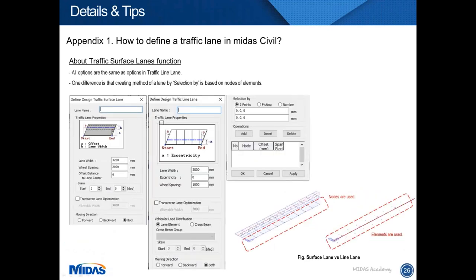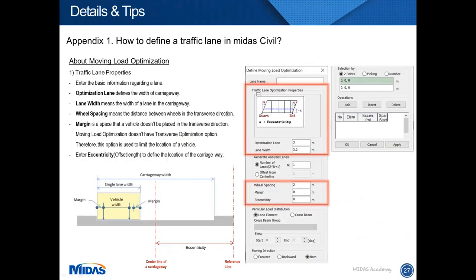For a planar element model, Midas Civil provides the traffic surface lanes function. The meaning of the options in this function is the same as in traffic line lane, but one difference is that traffic surface lanes are created by selecting reference nodes.